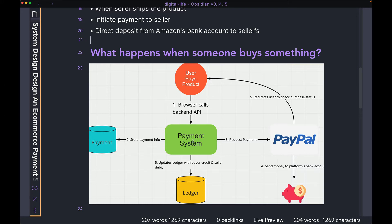Once it does that, it's going to go ahead and actually initiate the payment with a third-party payment provider — it can be PayPal, Stripe, or any other platform that's out there. The payment system does not deal with all the details about charging someone's credit card or storing someone's credit card information. All it does is call some API on PayPal's end to actually initiate the payment.